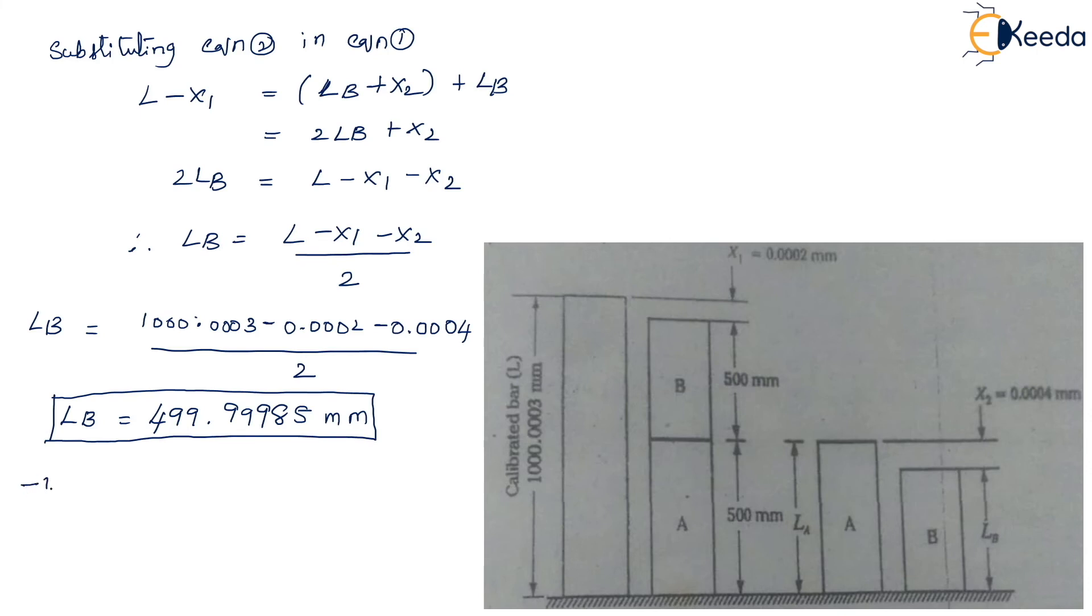Now from equation 2 that is LA can be written as LB plus x2. So LA's actual value can be found by 499.9985 plus 0.0004. So value of LA becomes 500.0025 mm. This way we have found the actual length of bar A and bar B.